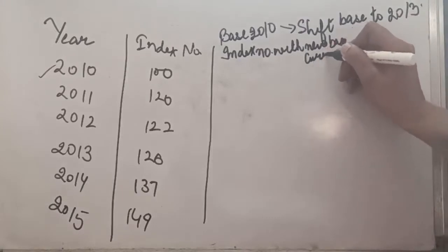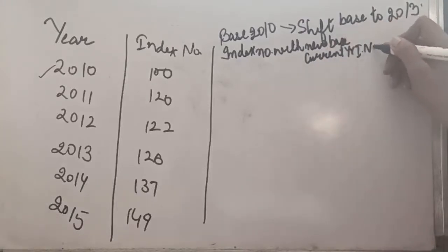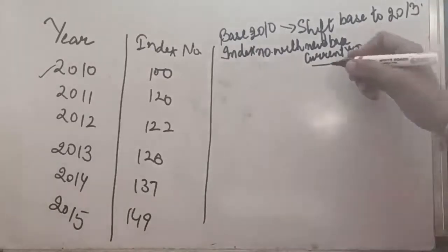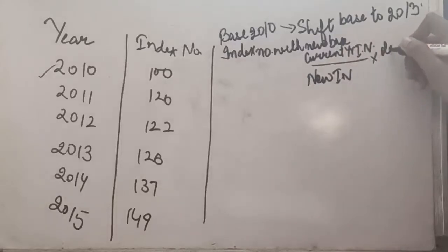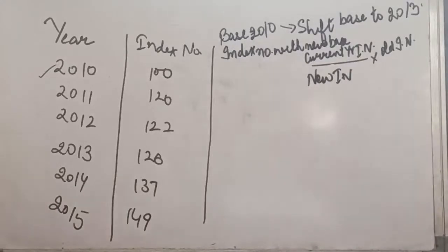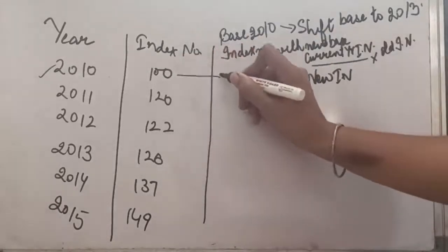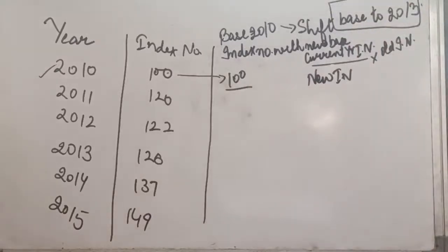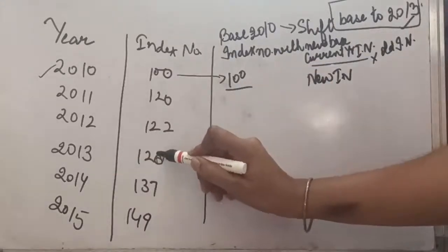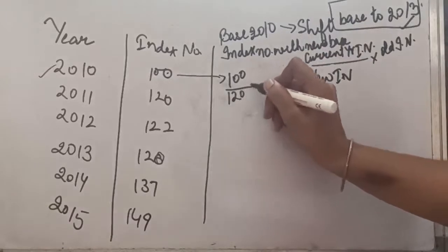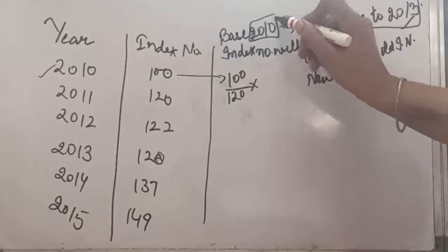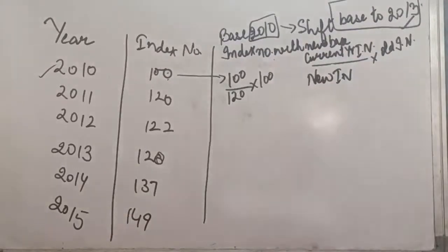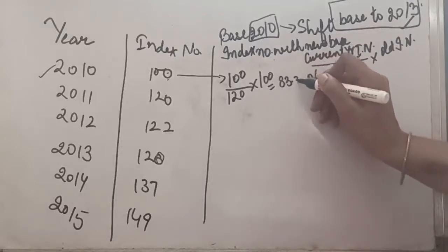The formula is: current year index number divided by the new index number, multiplied by the old index number. For the first year (2010), the current year index is 100, divided by the new base index of 120 (which is 2013's index number), multiplied by the old index number 100. So the first answer is 83.33.